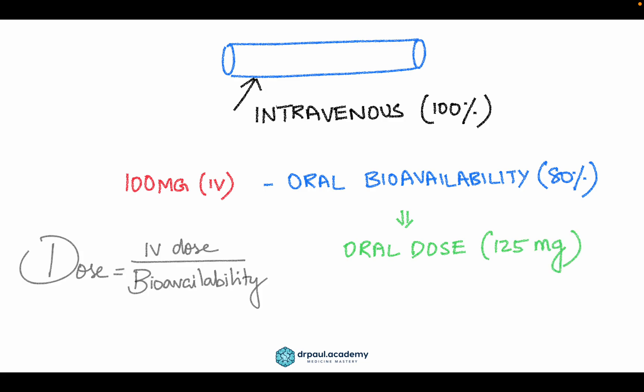How did I do that? It's quite simple. To calculate the dose, you divide the intravenous dose, which has the highest bioavailability, by the bioavailability of whatever route you want to measure. In this case, 80% or 0.8. 100 divided by 0.8 equals 125 mg. Similarly, you can calculate the dose for other routes as well.